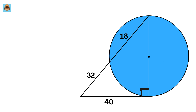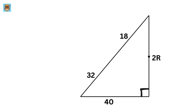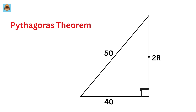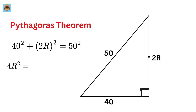Let us label the length of this diameter as 2R, where R is the radius of this circle. We can use the Pythagorean theorem to get 40 squared plus (2R) squared equals the hypotenuse squared, or 50 squared. So 4R squared equals 2500 minus 1600, which is 900.